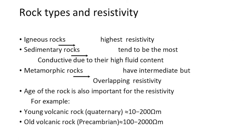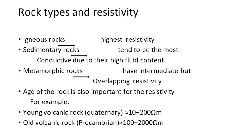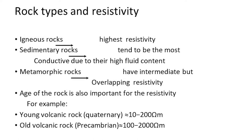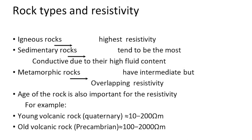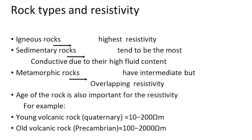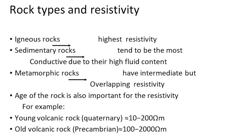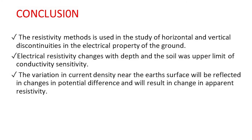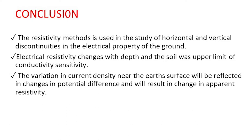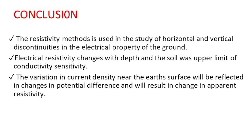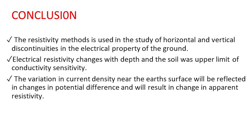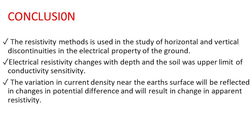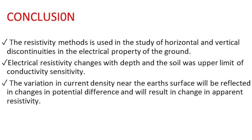Types of rocks and their resistivity: igneous rocks have the highest resistivity; sedimentary rocks tend to be the most conductive due to their high fluid content; metamorphic rocks have intermediate but overlapping resistivity. Age of rock matters — young volcanic rock ranges from 10 to 200 ohm-m and old volcanic rock from 100 to 2000 ohm-m. The resistivity method is used to study horizontal and vertical discontinuities in electrical properties, with variation in current density near the earth's surface reflected in changes in apparent resistivity.